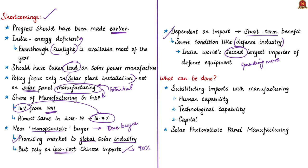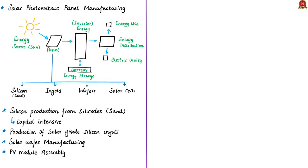The author suggests what can be done to overcome these shortcomings. First, we have to substitute imports with indigenous manufacturing. This requires human capabilities, technological capabilities and capital in the form of finance. Regarding human and technological capabilities, the author gives the example of the supply chain of solar photovoltaic panel manufacturing. To understand this, let us briefly understand the solar photovoltaic panel system.